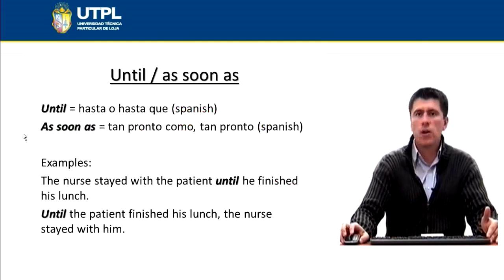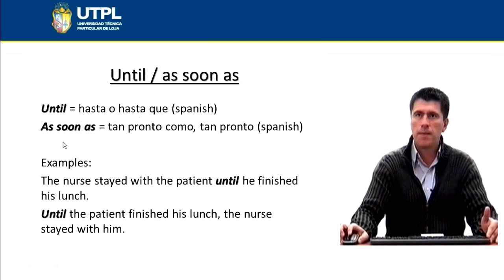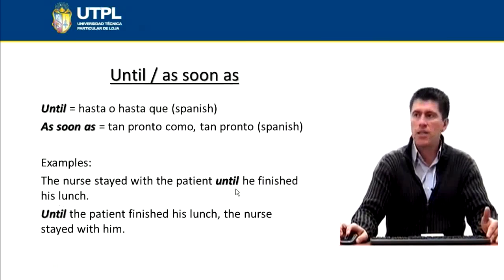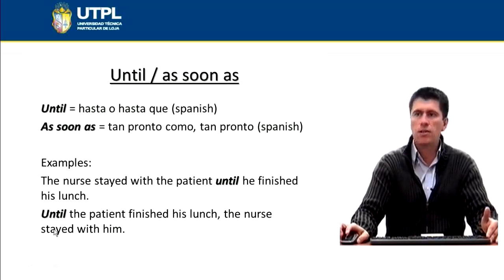The next grammar topic in your book is the use of 'until' and 'as soon as.' I have written the translations because this grammar is similar to what we have in Spanish. 'Until' can be translated as 'hasta' or 'hasta que,' and 'as soon as' can be translated as 'tan pronto como' or 'tan pronto.' Example: The nurse stayed with the patient until he finished his lunch — la enfermera se quedó con el paciente hasta que él acabó su almuerzo. In English you can also use 'until' at the beginning of the sentence: Until the patient finished his lunch, the nurse stayed with him.